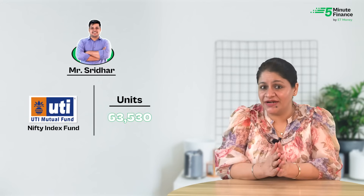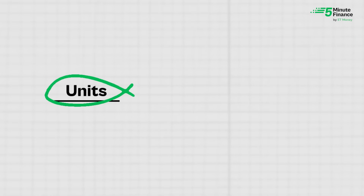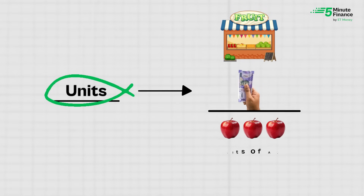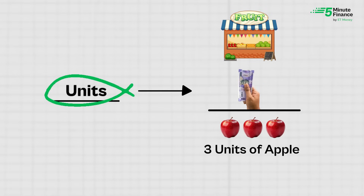Sridhar has accumulated 63,530 units of the UTI Nifty 50 Index Fund. Units here are similar to buying apples — if you go to the market and spend ₹100 and get three apples, you got three units of apples. Similarly, when you invest in mutual funds, you get units of mutual funds.